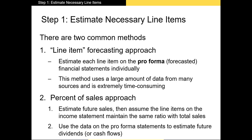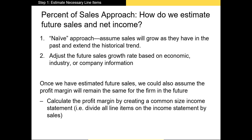The other method we can use is the percent of sales approach. In this approach we forecast future sales of the firm and then assume that the other line items on the income statement will grow at the same rate. So how do we get this sales growth information?